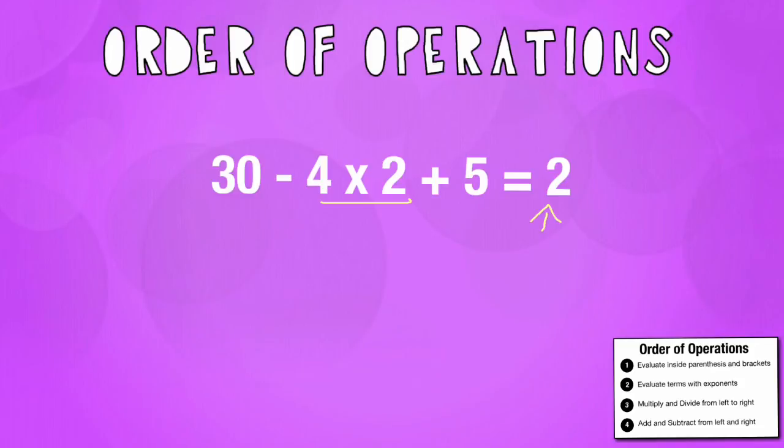So I'm going to try putting my parentheses around the 2 and the 5, which will force me to add first. So I get 30 minus 4 times 7.